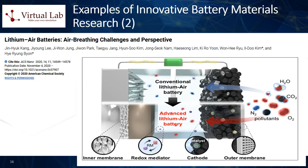Fourth, sodium-ion batteries: with lithium resources being finite, researchers have been exploring other abundant elements like sodium for use in batteries. Sodium-ion batteries could offer a low-cost, sustainable alternative if challenges such as the larger ionic size of sodium, compared to lithium, can be overcome, which affects energy density and cycling stability. Fifth, multivalent-ion batteries: batteries using ions like magnesium or aluminum, which can carry multiple charges, could potentially offer higher energy densities than lithium-ion batteries. These are very early-stage research but could be a breakthrough if challenges related to the electrolyte and electrode materials can be overcome.